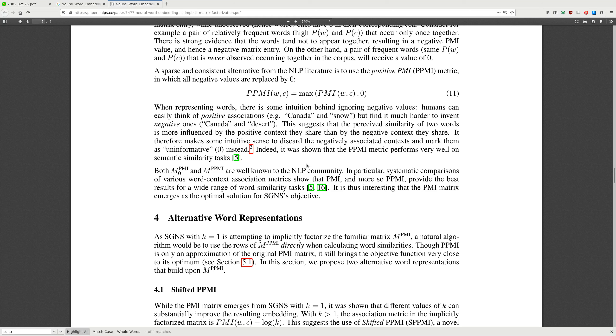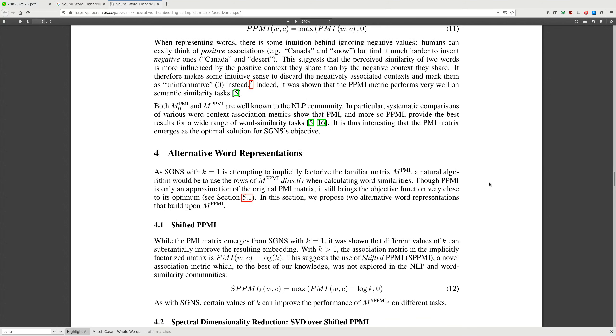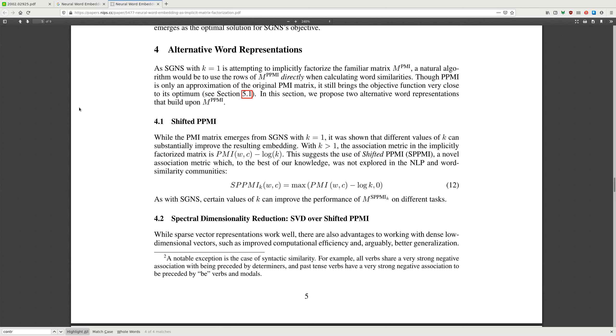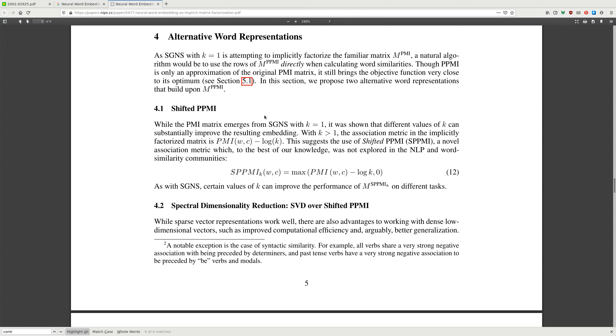When representing words, there is intuition behind ignoring negative values. Humans can easily think of positive associations like Canada and snow, but find it much harder to invent negative ones like Canada and desert. This suggests that preserving similarity of words is more influenced by positive contexts they share than by negative contexts they share. It makes therefore some intuitive sense to discard negatively associated contexts and mark them as uninformative instead. Indeed, it was shown that positive PMI metrics perform very well on semantic similarity tasks. Both PPMI and positive PMI are well-known in the community. A natural algorithm would be to use rows of positive PMI directly when calculating similarities. Though PPMI is only an approximation of the original PMI matrix, it still brings the objective function closer to the optimum.